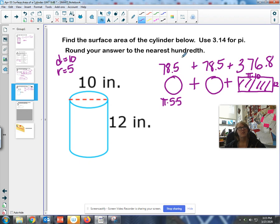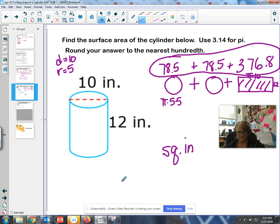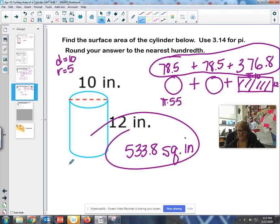And then grand total, those three things, 78 and 5 tenths, 78 and 5 tenths, 376 and 8 tenths. Holy cow. Our final, final answer, square inches. Ta-da. There you go. Cool. All right.